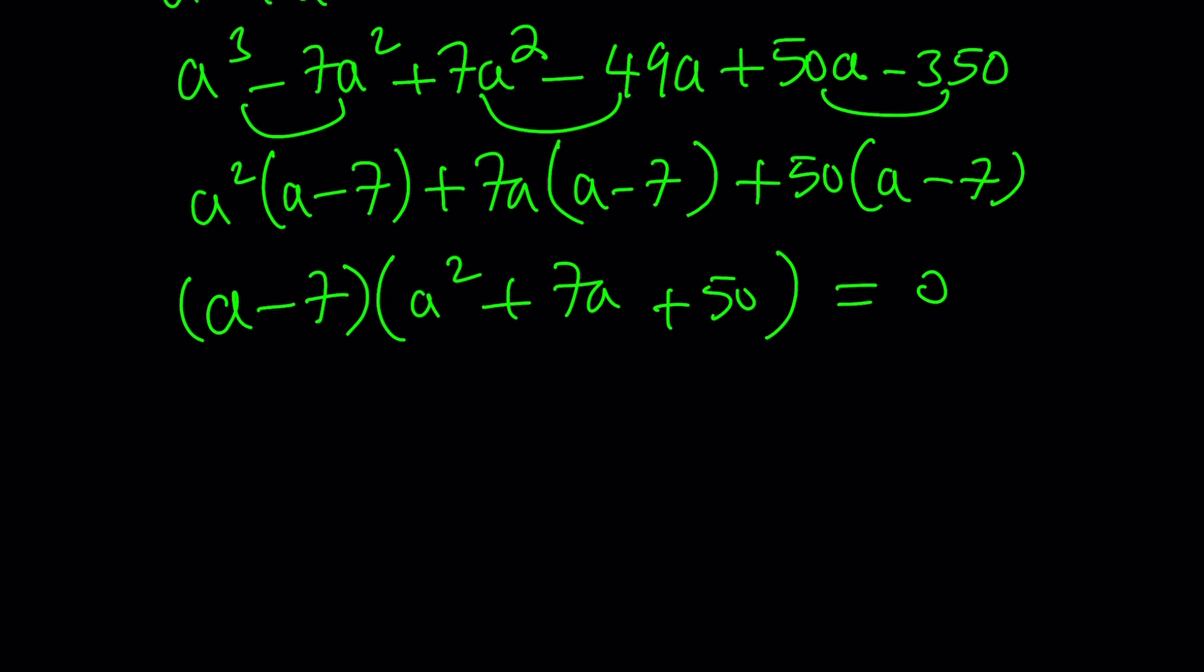The other factor will automatically appear as a² + 7a + 50. By setting this equal to 0, you can solve for all solutions because you get a quadratic, which is easy to solve. Using the quadratic formula, you get a = -7, and the discriminant is negative 151.